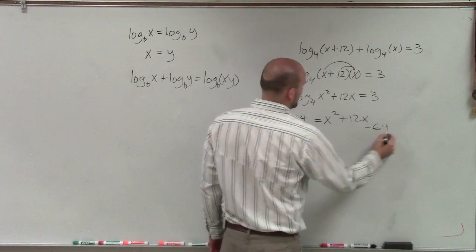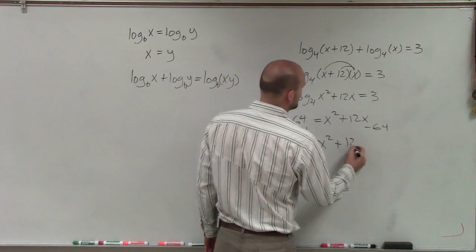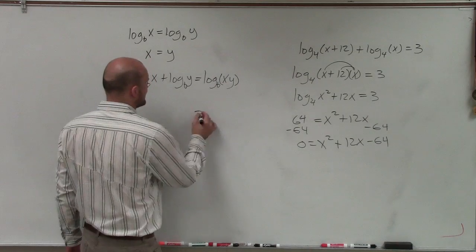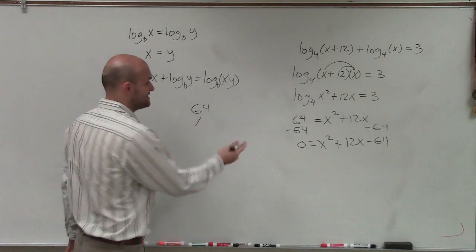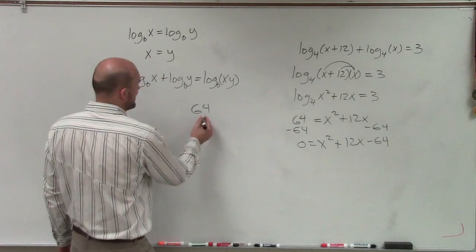I can look into factoring to solve my equation. I need to determine what two numbers multiply to give me negative 64 and add up to give me positive 12. Since it's negative 64, I know one factor has to be positive and one has to be negative. Let's deal with all the factors.